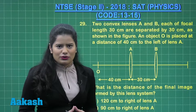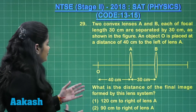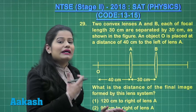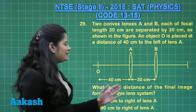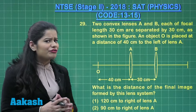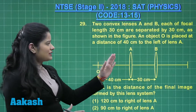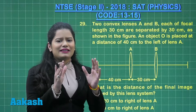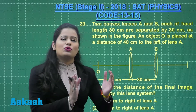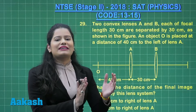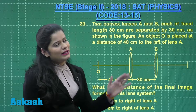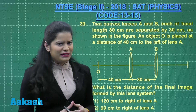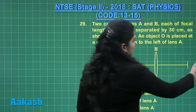Now what we need to find out? The question says: what is the distance of the final image formed by this lens system? Obviously, first lens A is going to form the image of this object, and then that image is going to act as an object for lens B, and the final image will be formed by lens B. So now let us quickly solve this question.